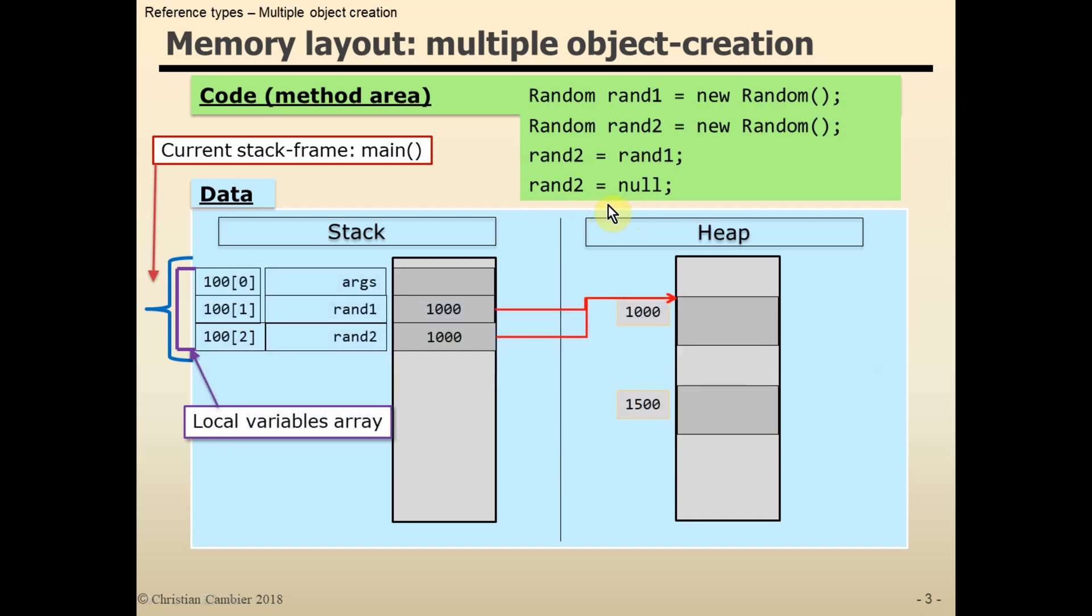Assigning null to rand2 will have rand2 point to nothing. This can be useful in some situations. For example, during an initialization process where you might test a reference for null before continuing. If it is set to null, you create the object first, otherwise you carry on with the existing reference.